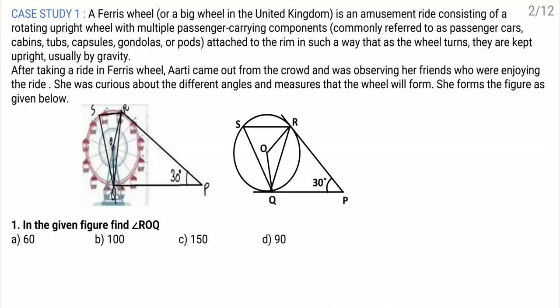A ferris wheel, or a big wheel in the United Kingdom, is an amusement ride consisting of a rotating upright wheel with multiple passenger-carrying components — commonly referred to as passengers, cars, cabins, tubes, capsules, gondolas, or pods — attached to the rim in such a way that as the wheel turns, they are kept upright usually by gravity. After taking a ride in the ferris wheel, Aarti came out from the crowd and was observing her friends who were enjoying the ride. She was curious about the different angles and measurements that the wheel will form.